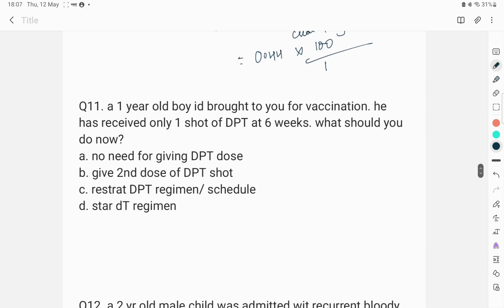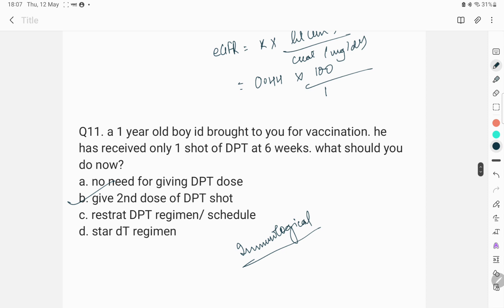The next question was a 1-year-old boy is brought to you for vaccination. He has received only one shot of DPT at 6 weeks. What should you do now? Straight away give second dose of DPT shot because of the immunological memory that was made by the first shot. We do not restart the schedule. We just give the second dose.